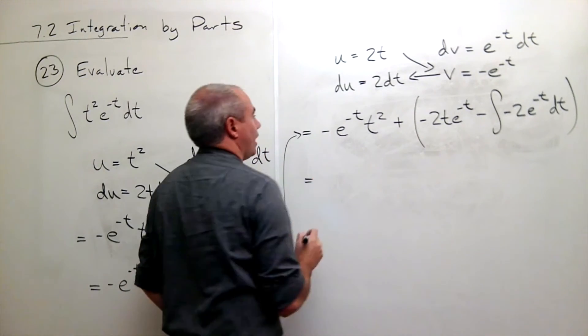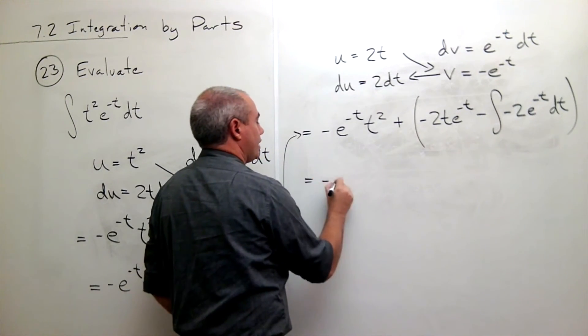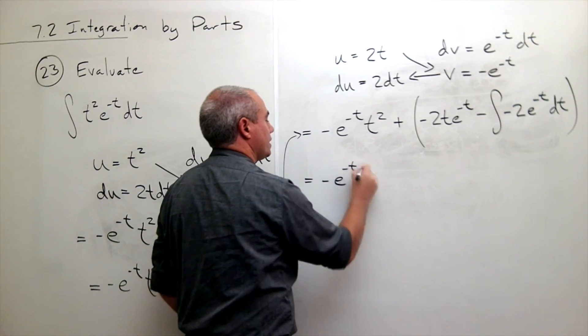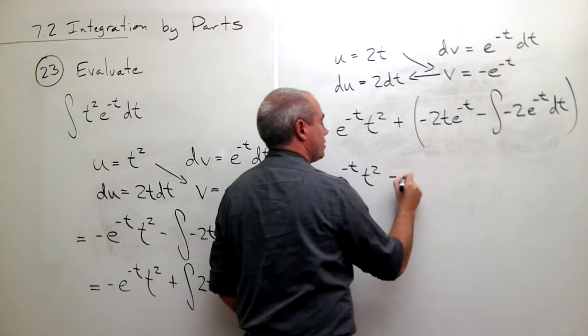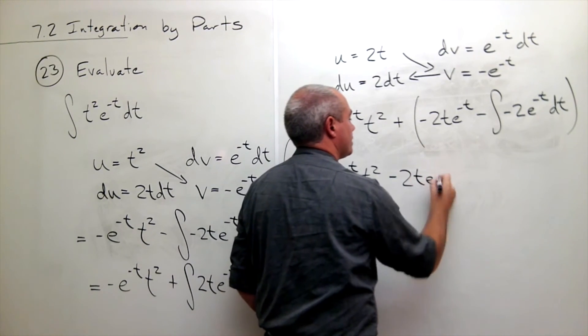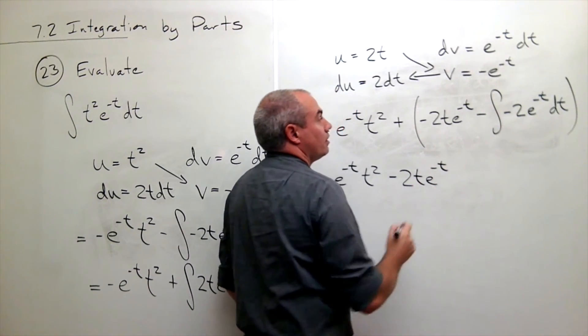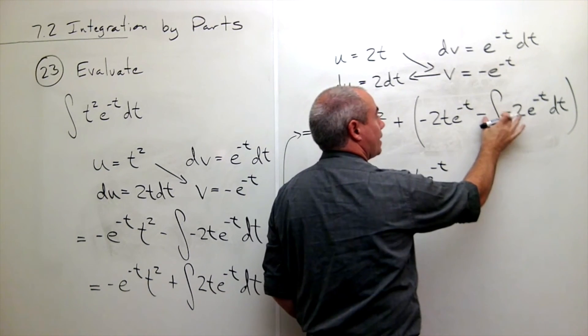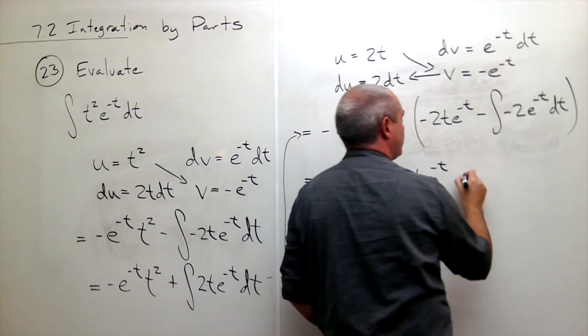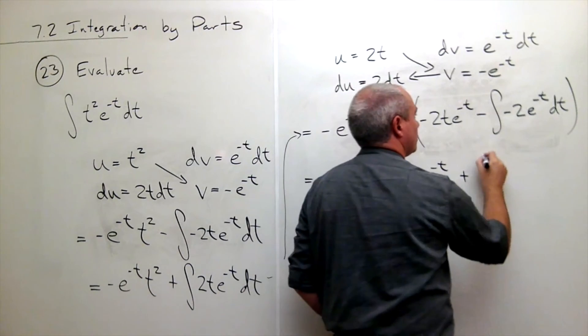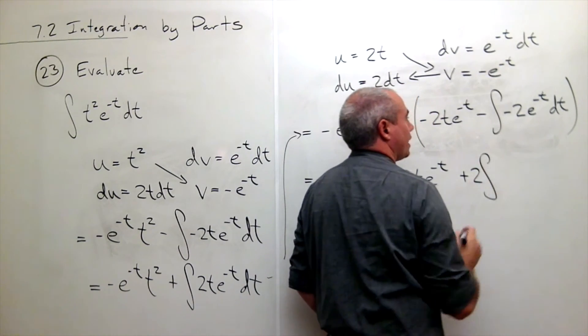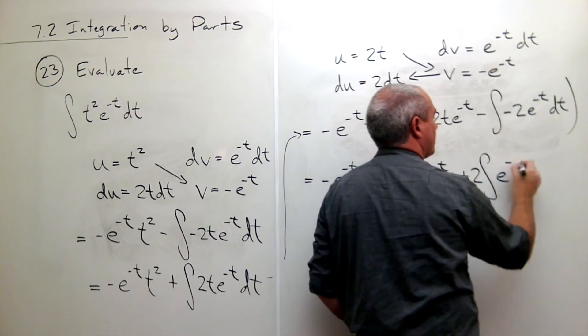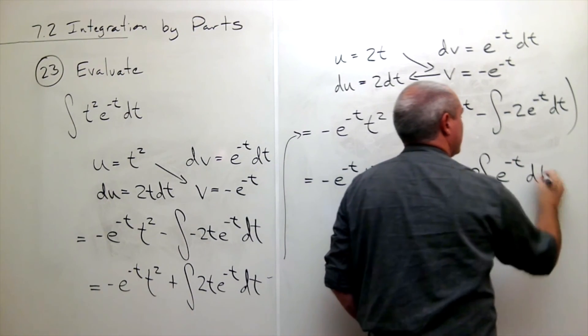Let's rewrite. I've got negative e to the negative t times t squared minus 2t e to the minus t plus, because I've got a minus and a minus, so I've got plus integral. I could bring the 2 out if I wanted to, so we've got 2 on the outside. I've got e to the minus t dt.